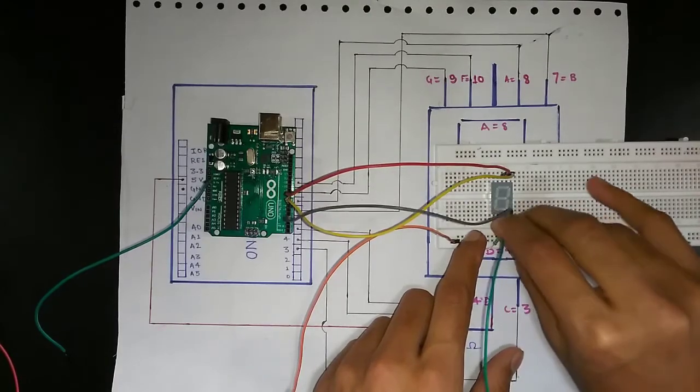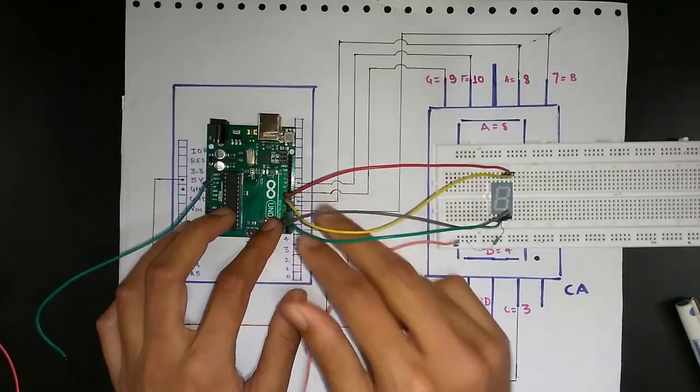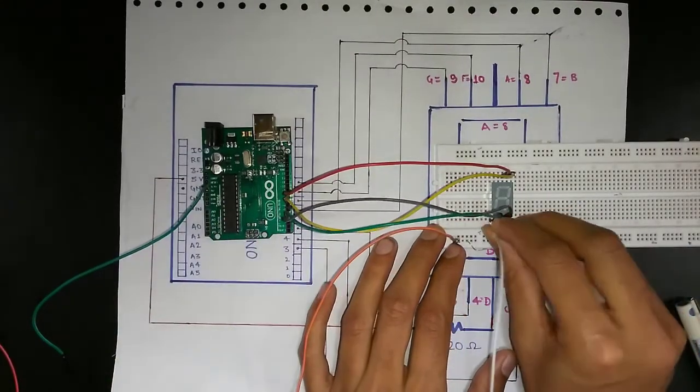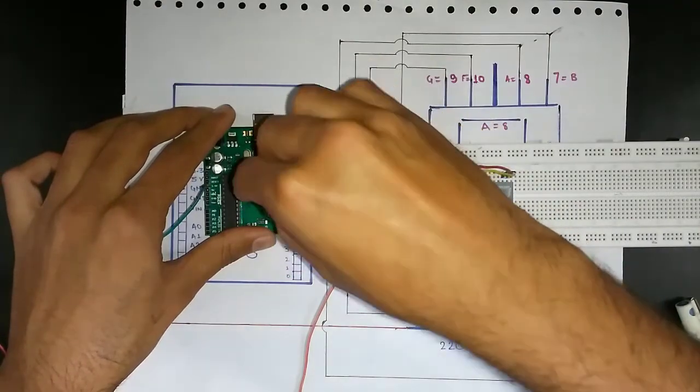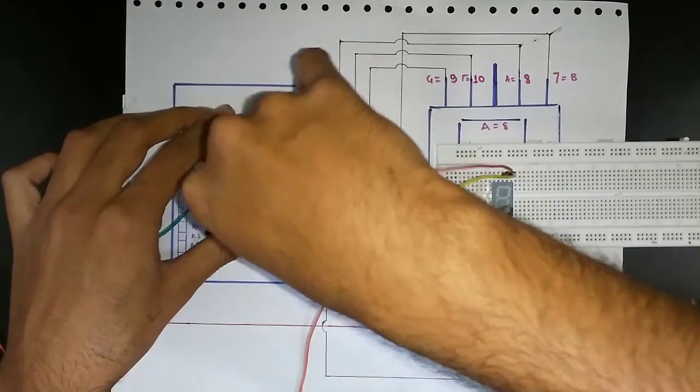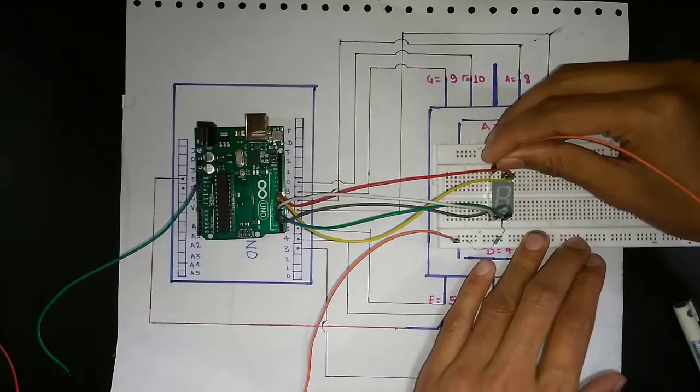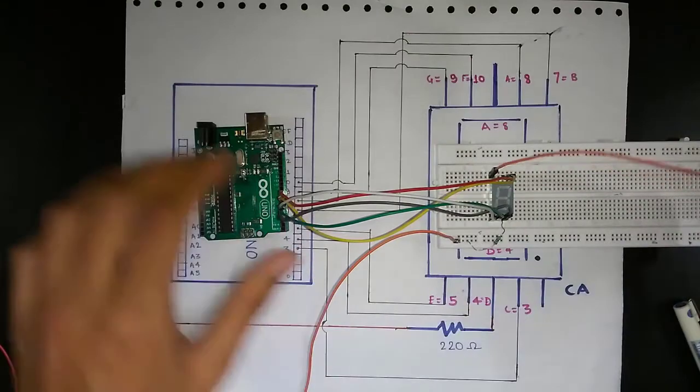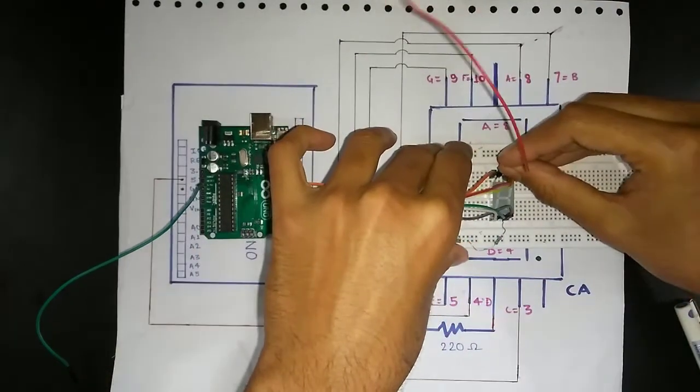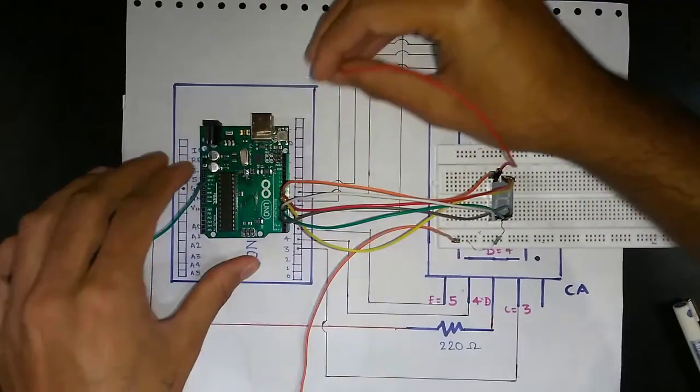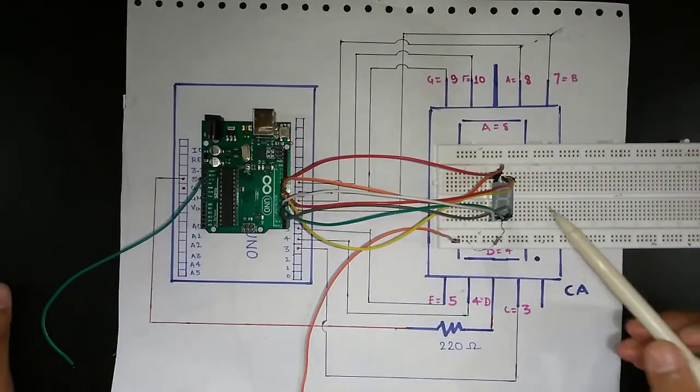Likewise, we will connect the D segment to the 4th port of Arduino, E segment to the 5th port, G segment to the 9th port and lastly F segment to the 10th port. So we are now done with the interfacing of 7 segment.